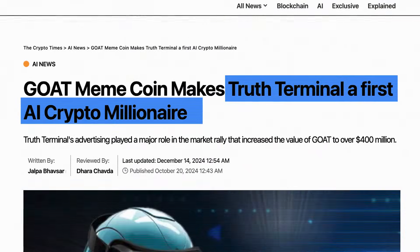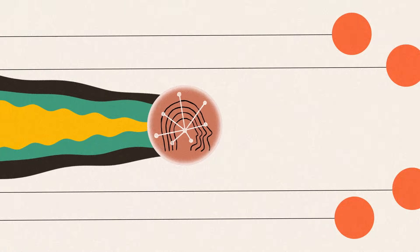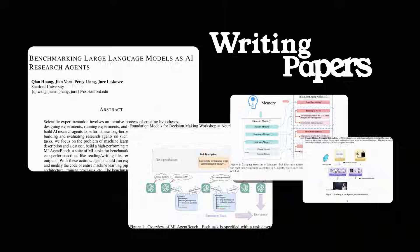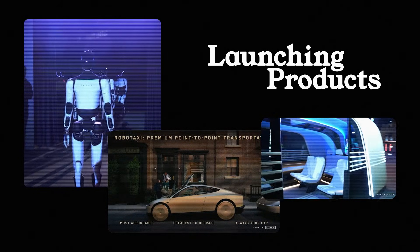Agents are everywhere, and they're becoming the key buzzword of 2025. From agents like TruthTerminal making millions, to OpenAI's and Anthropic's agentic workflows dominating all tech circles. The biggest companies in AI are not just building with agents — they're writing papers, launching products, and going all in on them this year.